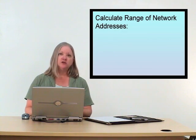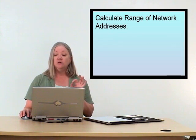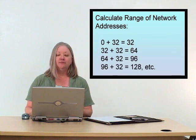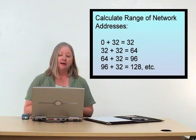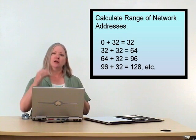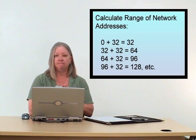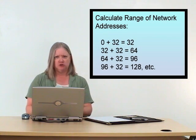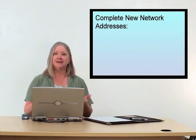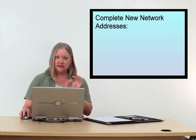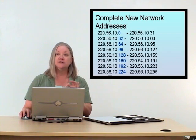But what if they've asked for the range of valid network addresses? We're going to use our increment — or magic number — and keep adding it. Starting at zero, add 32 to get 32, then 64, then 96, then 128, then 160, and so on, continuing until we reach 224. If you've added it all up and don't get to 224, check your math — it's a built-in double check. Then we're going to take our TCP/IP address and fill in these numbers.